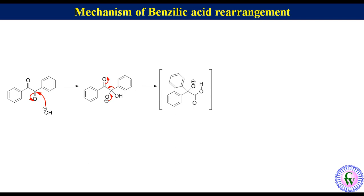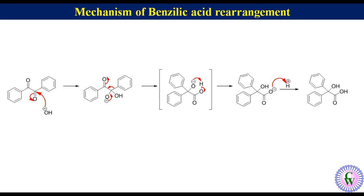We call this species non-isolable because alkoxide ion is more basic than carboxylate ion. So there will be immediate proton transfer to produce the carboxylate ion of benzylic acid, which after protonation during acidic workup will produce benzylic acid.